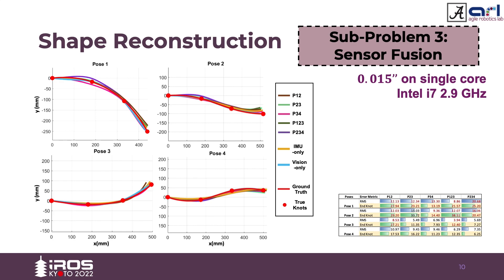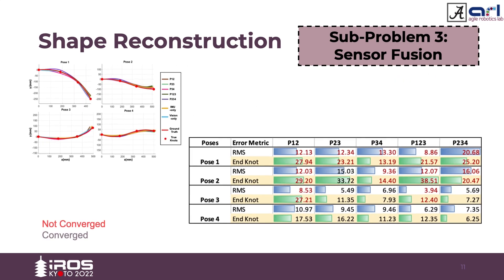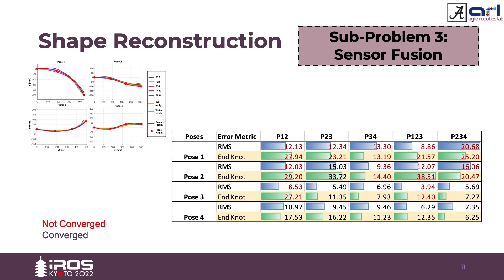For sensor fusion shape reconstruction, all different cases of missing positional information were taken into account with slope data available at all nodes. It took about 15 milliseconds to estimate a curve using an Intel i7 processor. Both root mean square and Hausdorff distance were calculated for all sensor fusion cases across four poses. The error tends to increase for cases where the optimization function was unable to achieve an optimum solution, possibly due to missing material properties inside the model.